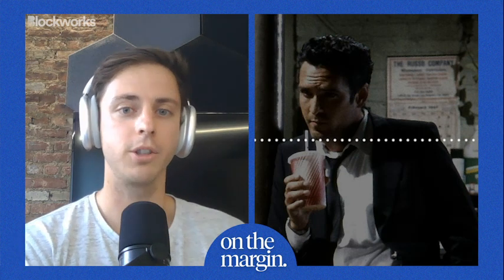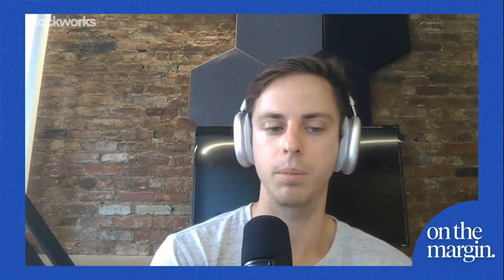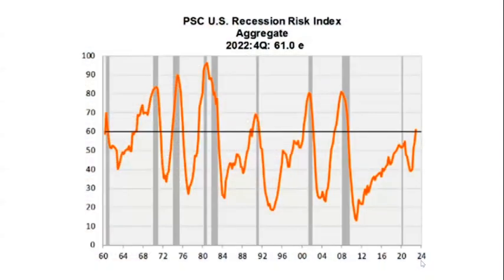Welcome back to another episode of On the Margin. Today I'm joined by repeat guest Mr. Blonde — welcome back to the show. Just for context for the audience, I want to talk about this idea of recession — the big R word — and how that translates into corporate earnings for the next couple of quarters. And then I want to close with housing. Let's start with the U.S. recession risk index aggregate. Can you talk about what goes into this chart and whether it informs your view of the risk of recession?